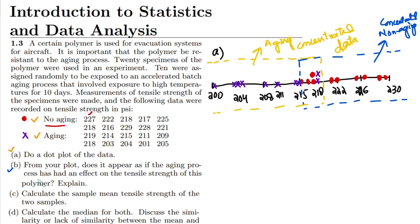What is part b? Part b is asking us: from your plot, does it appear as if the aging process has had an effect on the tensile strength of this polymer? Explain.